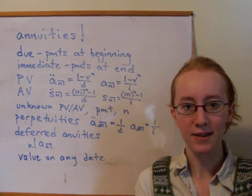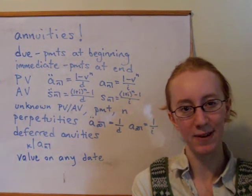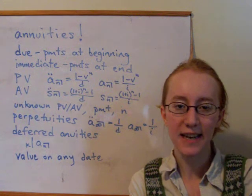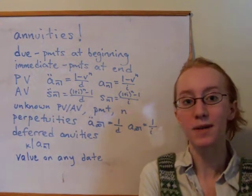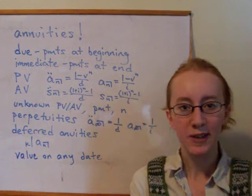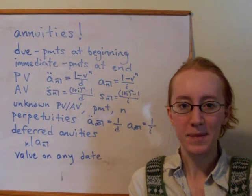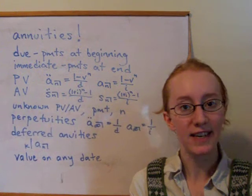All you have to do is find the value at any one time, for example the present value at time 0 is a good default to take it to, and then if you want it at time t, then bring it forward by multiplying by 1 plus i to the t. So you can always shift the value around based on what time you're looking at and what time you've already taken it to.